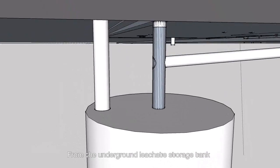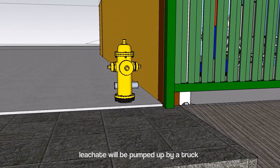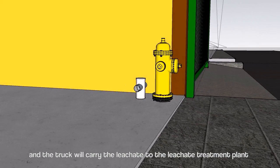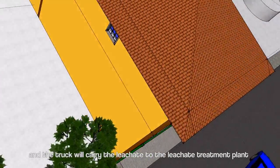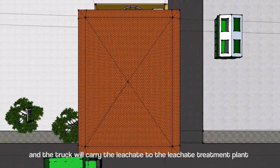From the underground liquid storage tank, liquid will be pumped up by a truck. The truck will carry the leachate to the leachate treatment plant.